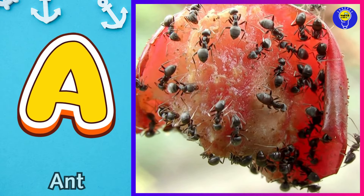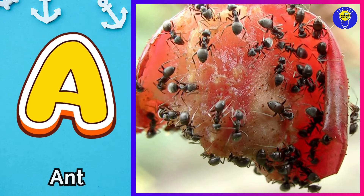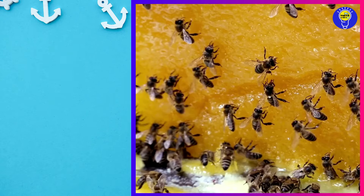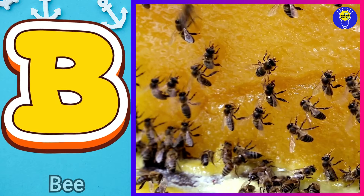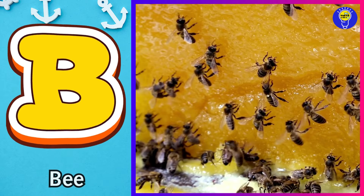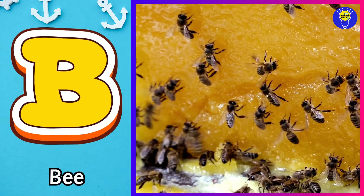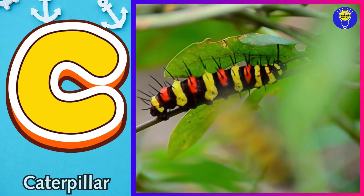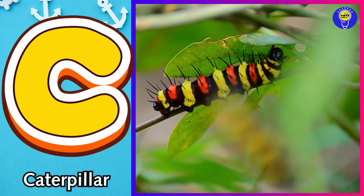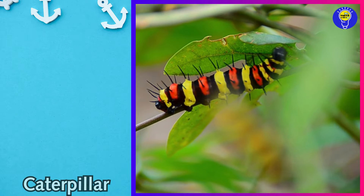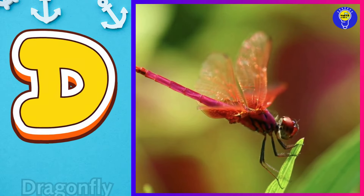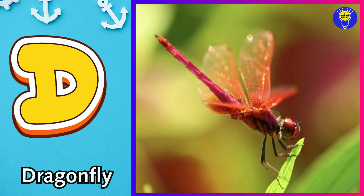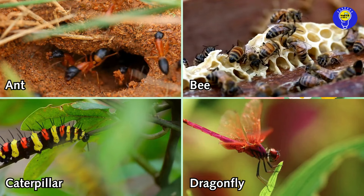A is for ant. a, ant. B is for bee. b, bee. C is for caterpillar. c, caterpillar. D is for dragonfly. d, dragonfly.